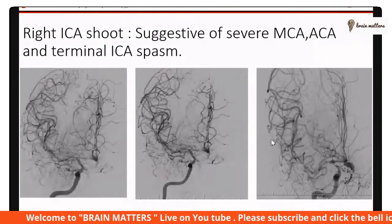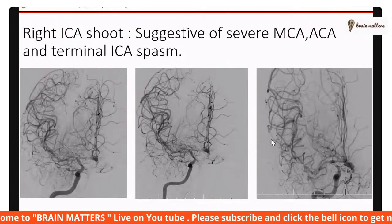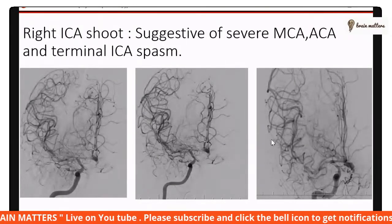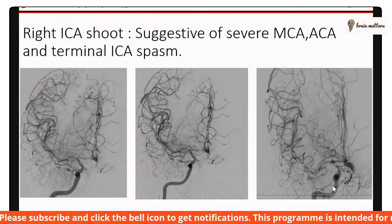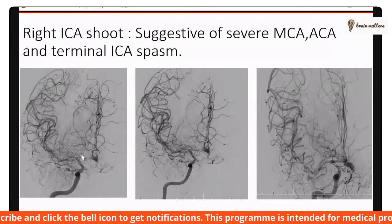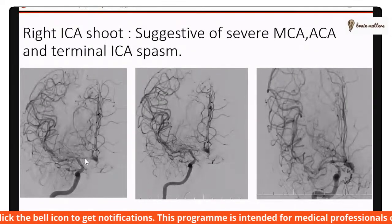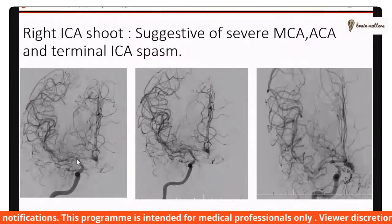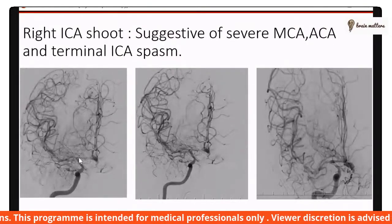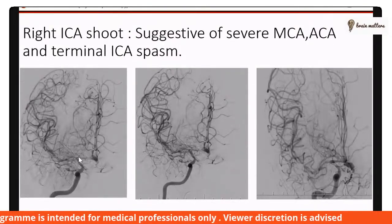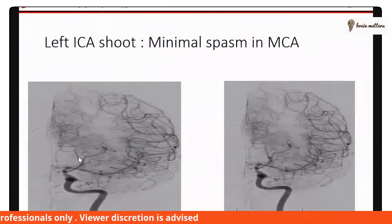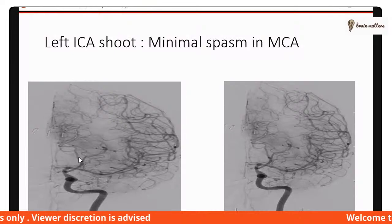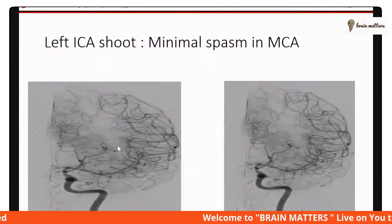DSA was performed. Right ICA angiogram was suggestive of severe spasm in the MCA, ACA, and terminal ICA. Left ICA angiogram showed minimal spasm in the MCA.